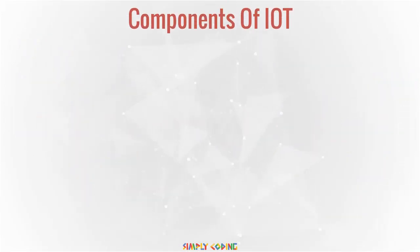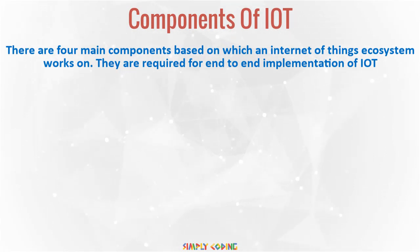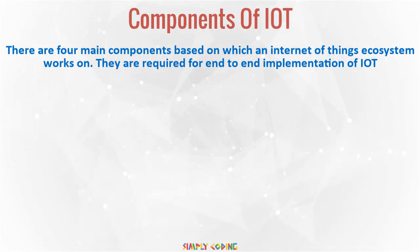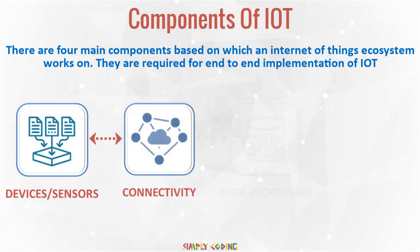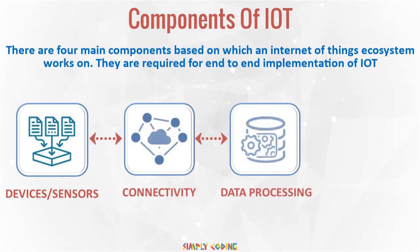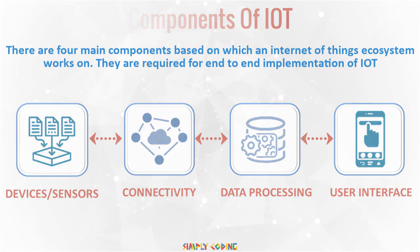So, how does IoT work? There are four main components based on which an Internet of Things ecosystem works: devices or sensors, connectivity, data processing, and user interface. Let's look at each of them one by one.